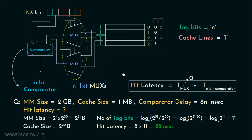This is how Direct Memory Mapping is implemented at hardware level. We need numerous multiplexers but only one comparator, and the type of comparator is specified by the number of bits in the tag field. Pertaining to this hardware implementation, these types of questions are generally asked in competitive exams.